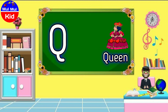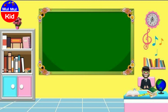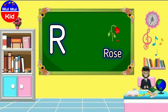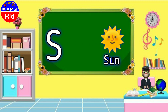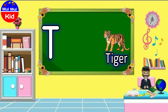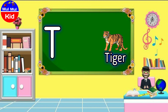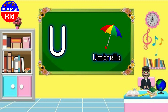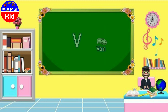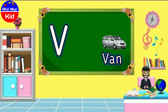Q for Queen, R for Rose, S for Sun, T for Tiger, U for Umbrella, V for Wind.